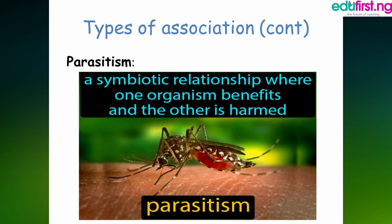We have the predator relationship. A predator relationship is a type of association between two organisms in which the predator kills the other one. Part A kills part B, benefits from part B, and at the end kills part B. That is a predator relationship.